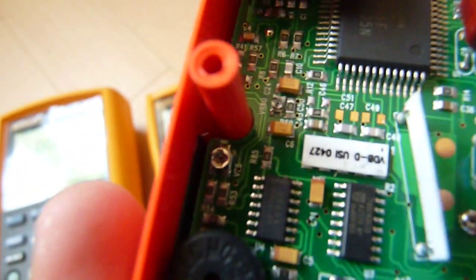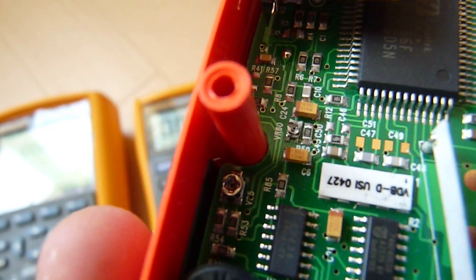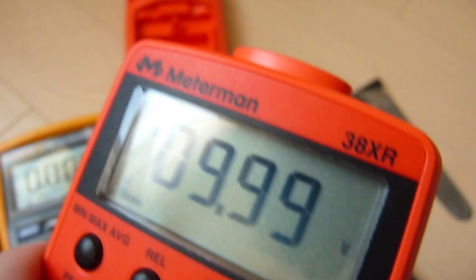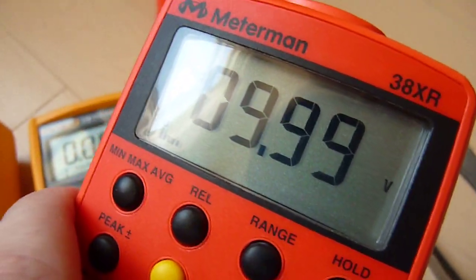So yeah, I'll probably be replacing it with a multi-turn pot, because that's unacceptable. If I bump it again or it falls off the bench and it's going to be off by 50 millivolts, that's unacceptable.